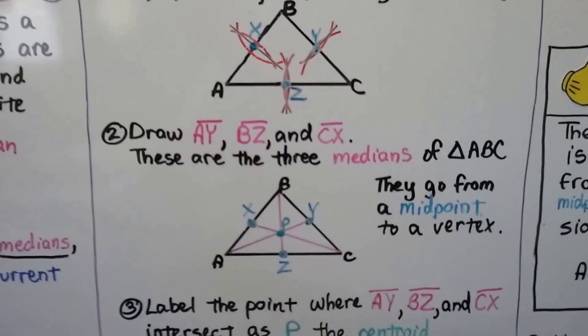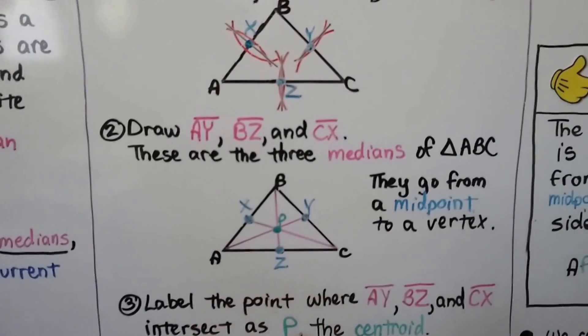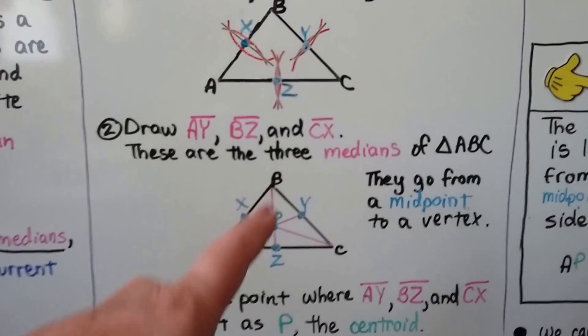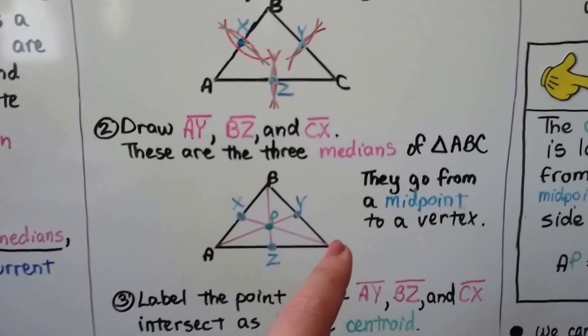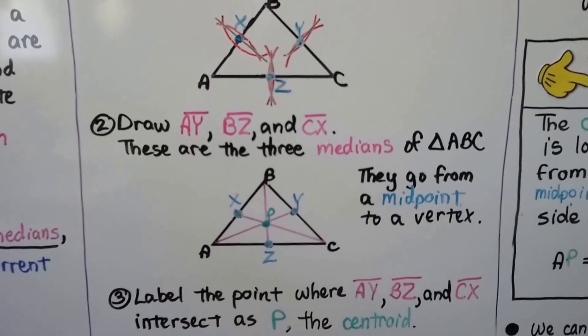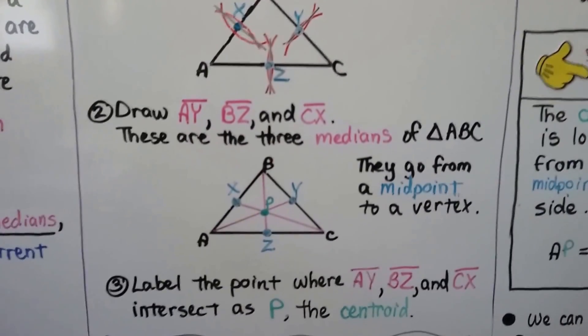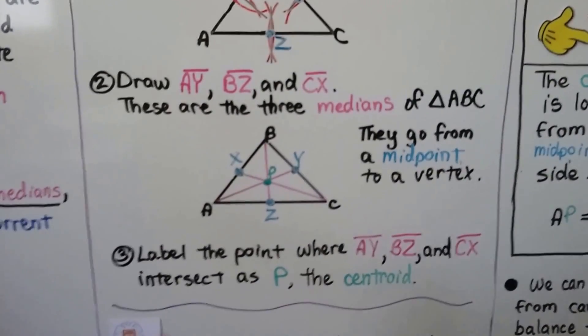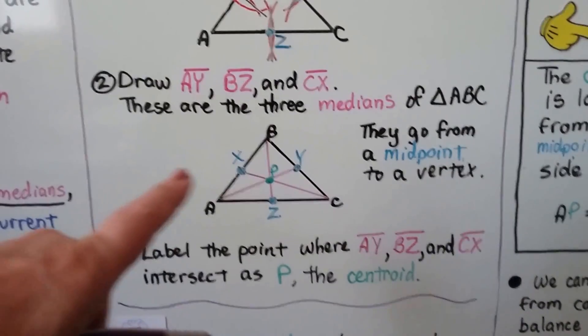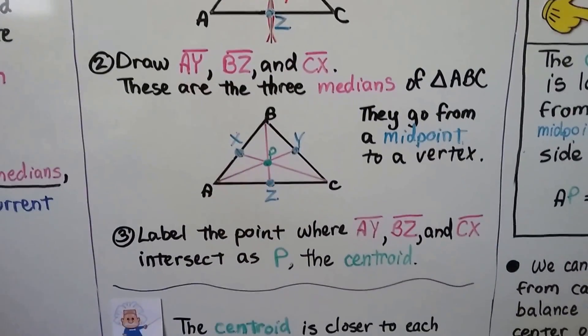Then we draw segments AY from this vertex to that midpoint, BZ from this vertex to that midpoint, and CX from this vertex to that midpoint. So they go from a midpoint to a vertex, or you can say vertex to a midpoint. And we label the point where segments AY, BZ, and CX intersect as P. That's the centroid.